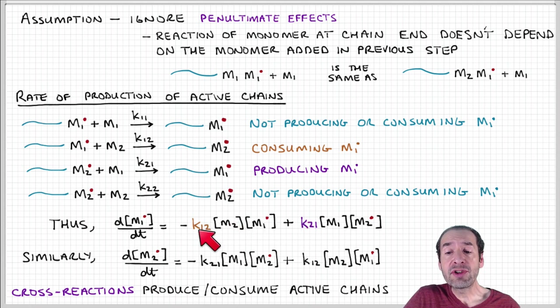Notice that when we write these equations, only the cross reactions result in a net production or consumption of active chains. That's a key point to remember as we go through this analysis.